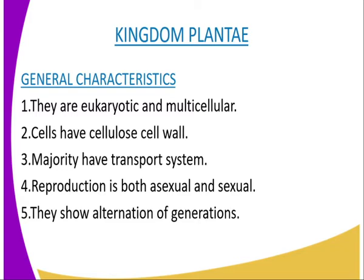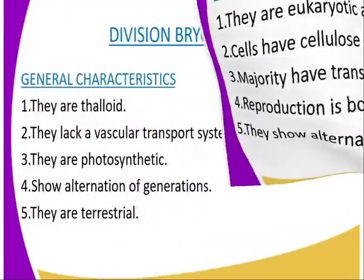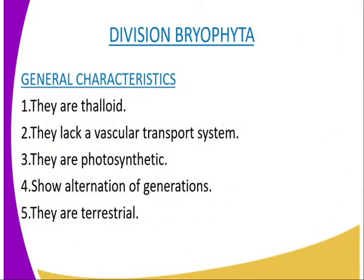The Kingdom Plantae is divided into three main divisions, whereby the three main divisions are: we have the Bryophyta, the Pteridophyta, and the Spermatophyta. In this lesson, we are going to look at one of the divisions, which is division Bryophyta. Remember that Kingdom Plantae is divided into three divisions — Bryophyta, Pteridophyta, and Spermatophyta.